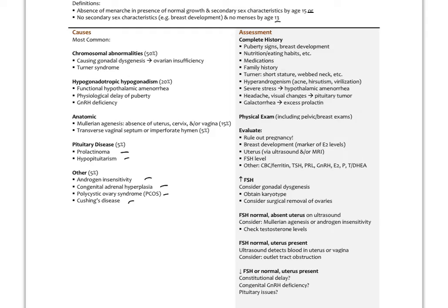Assessment for primary amenorrhea involves a complete history: looking at pubertal and breast development, nutrition, eating and exercise habits, medications, family history, signs of Turner syndrome, signs of hyperandrogenism (acne, hirsutism, or virilization), severe stress (which could induce hypothalamic amenorrhea — often seen with female athlete triad involving over-exercise, very low caloric intake, and high stress), headache with visual changes (possibly indicating pituitary tumor), and galactorrhea (suggesting excess prolactin). Physical exam includes a full gynecologic exam, rule out pregnancy, and look for breast development as a marker of estrogen levels.